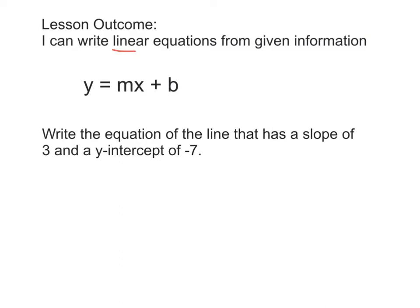In this linear equation y equals mx plus b, we have to remember that this is slope-intercept form. m represents our slope, and b represents our y-intercept.